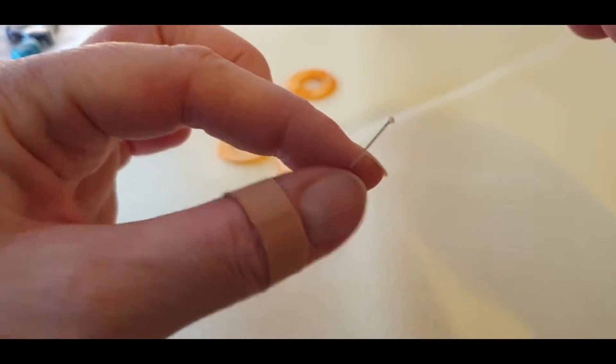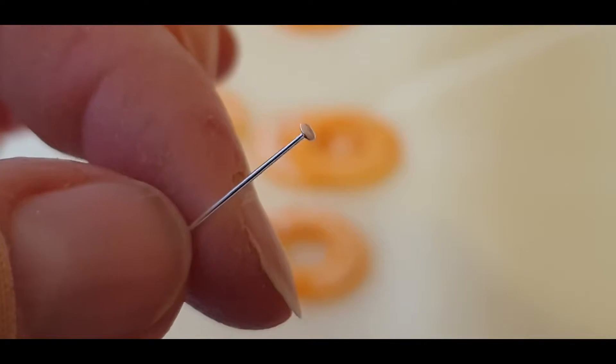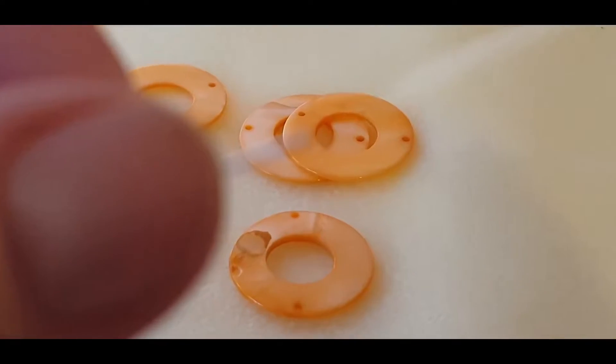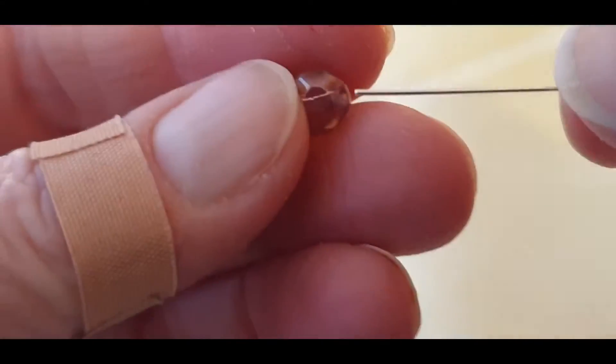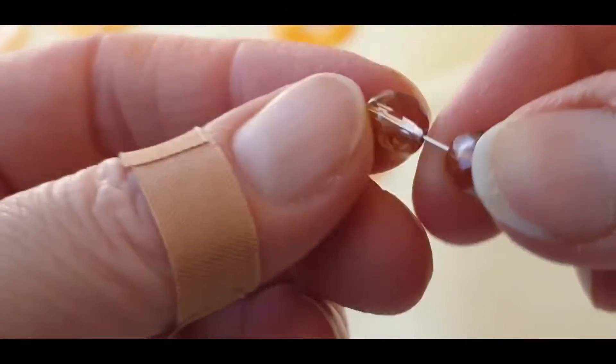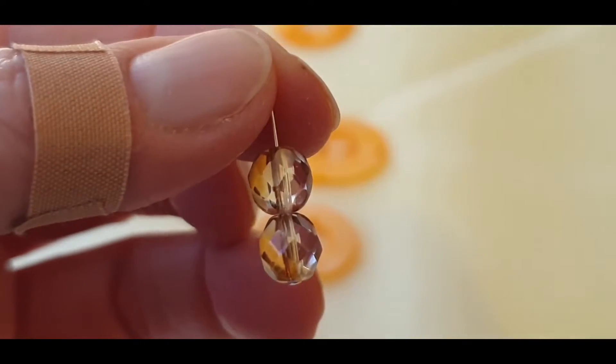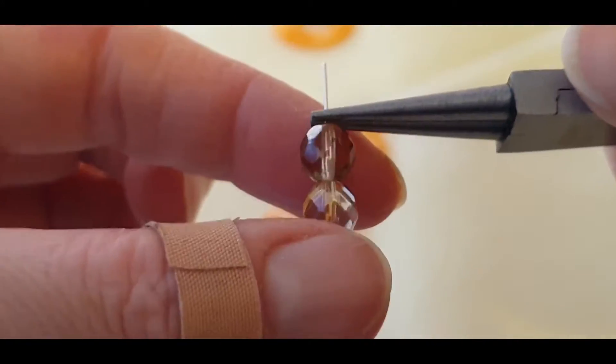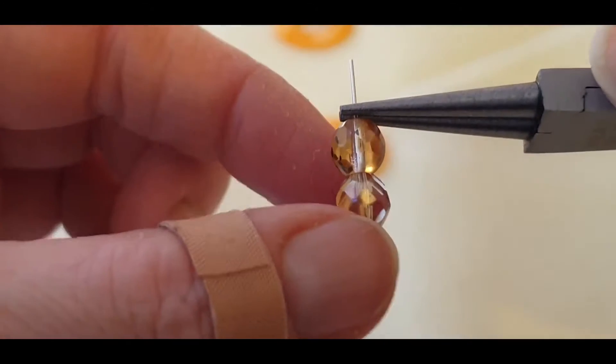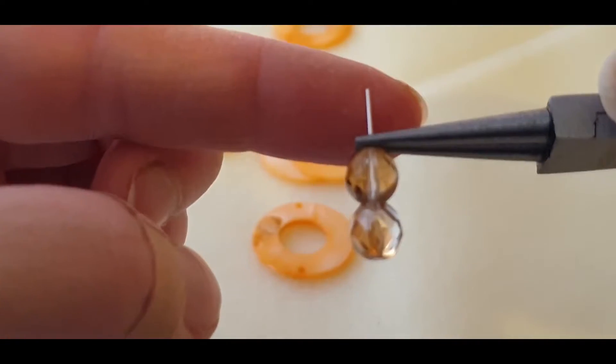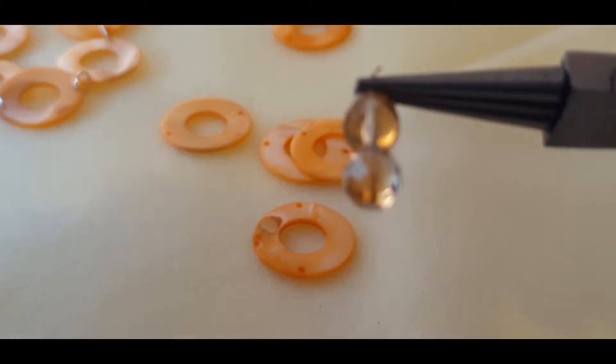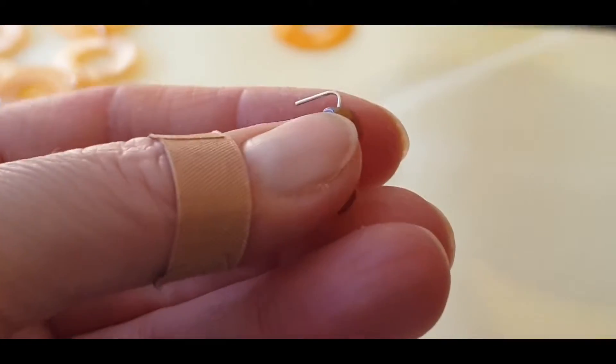So this is a head pin. I don't know if you can see that. It's a very, very, very, I think it's one inch and it basically is silver plated. So I'm going to put a couple of beads on like so, and then I'm going to use my round nose pliers just to put at the top of the bead, making sure you hold the bottom of the beads. And then what I do then is I put my finger here and then I push the head pin over.